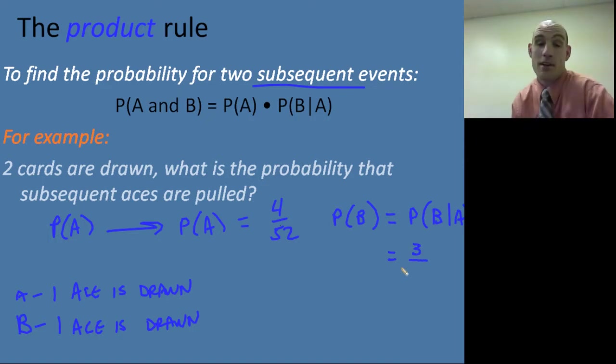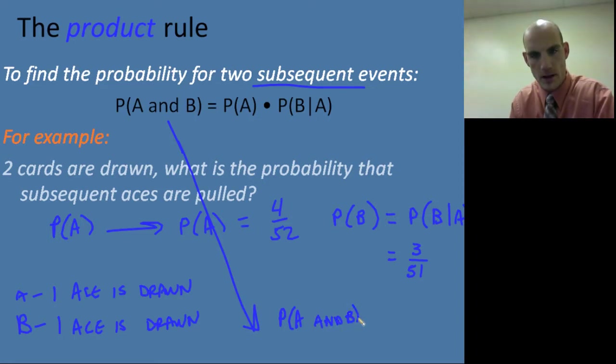But because I've pulled out one of those cards, I don't have 52 choices anymore. I really only have 51 choices. And so the probability of A and B becomes the probability of A and B is equal to 4 out of 52, which is the probability that the first event happens, times 3 out of 51, which is the probability that the second event happens, assuming that the first event happened. And so what we end up with is something that's completely different. It's actually 1 out of 221 when we get done reducing all that.